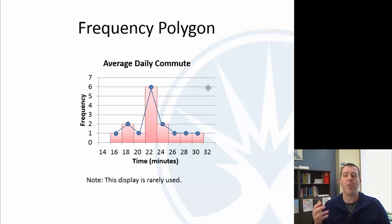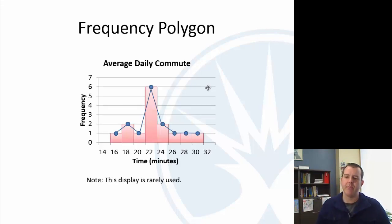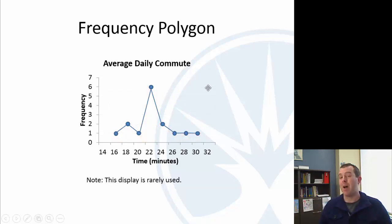And if I put a dot at the middle of each of those and connect all of those dots, that is a frequency polygon. In the middle there, the middle there would be right at the midpoint. So from 16 to 18 the midpoint would be 17, from 18 to 20 the midpoint would be 19. And then connecting those, that's an example of a frequency polygon. I don't know that I've ever seen one of these in publication but just wanted to expose you to it.